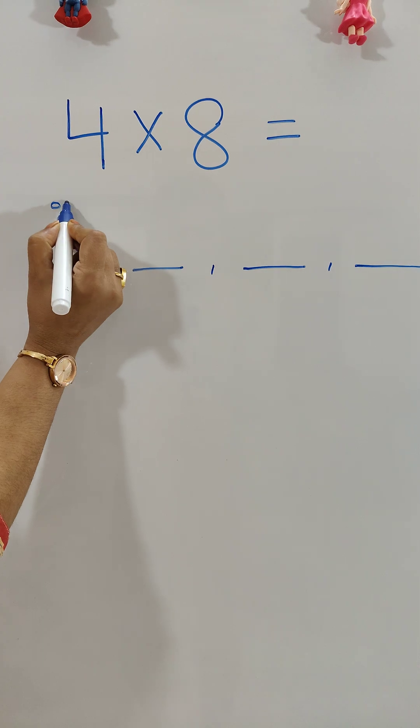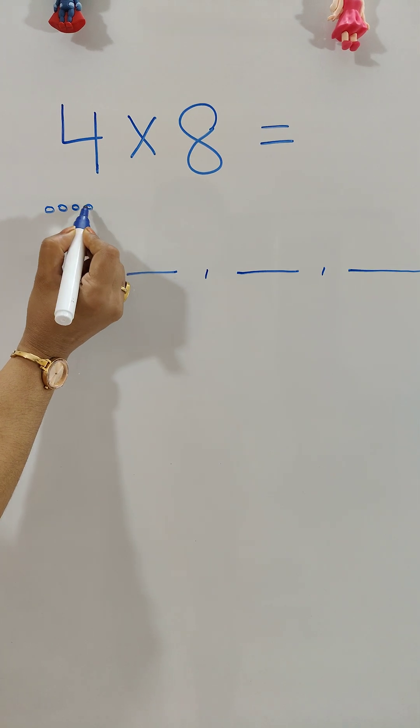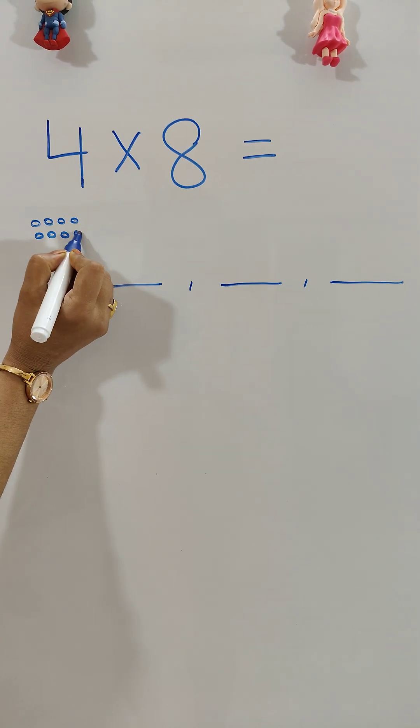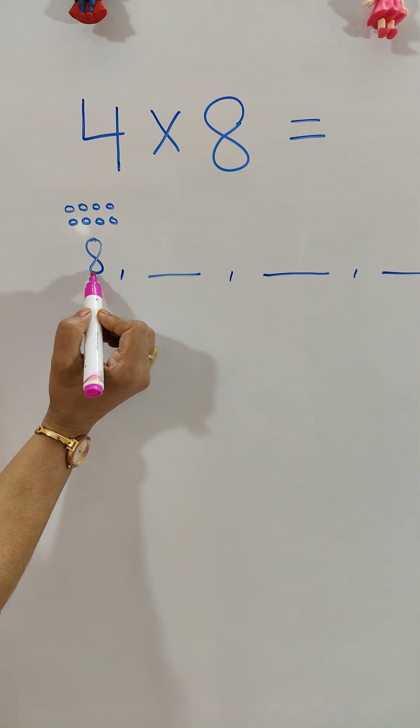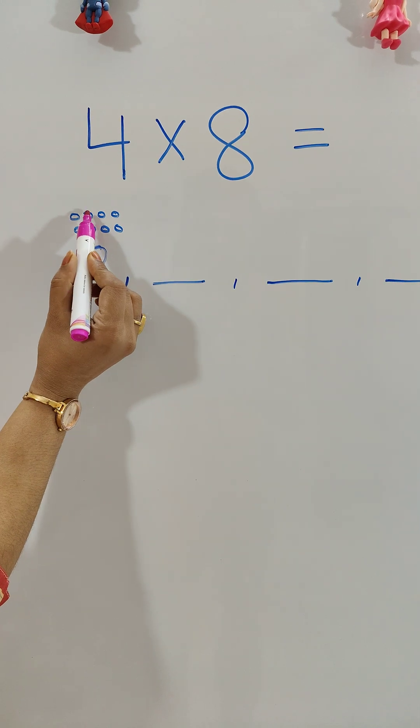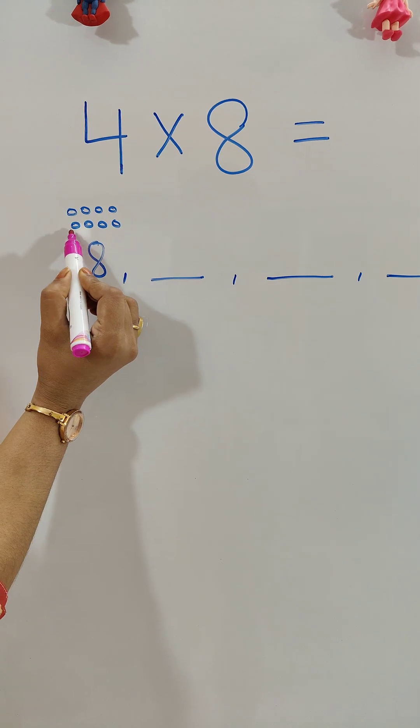Now count the 8 dots: 8, after 8... 9, 10, 11, 12, 13, 14, 15, 16. So the next number will be 16.